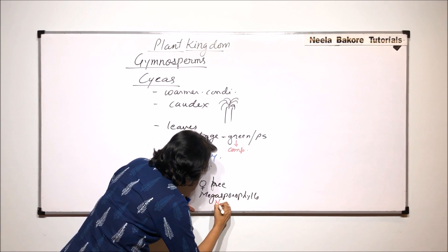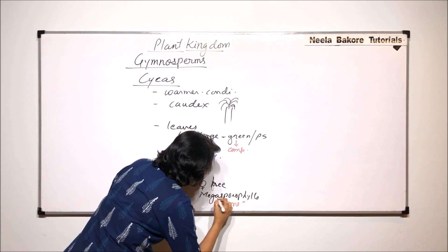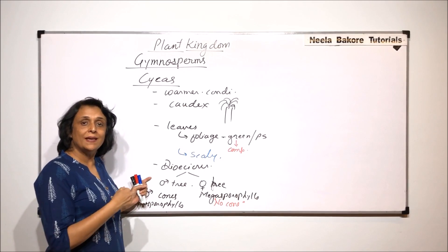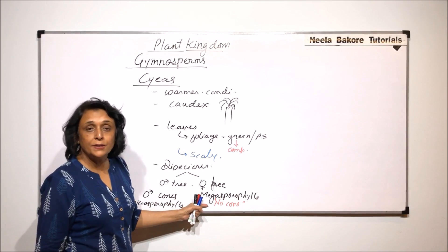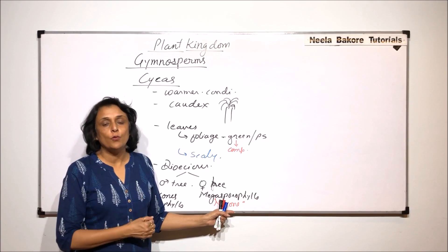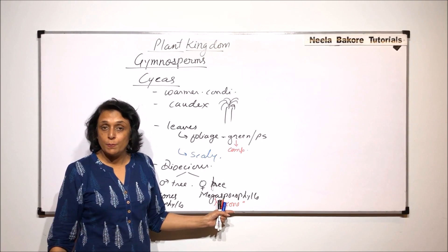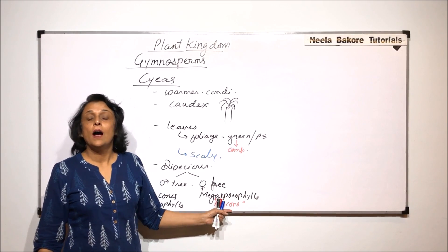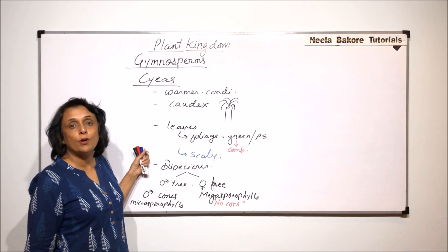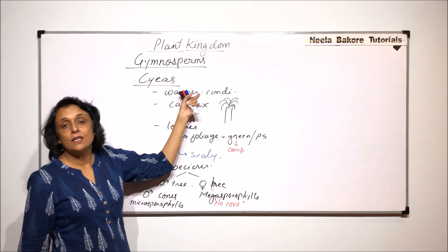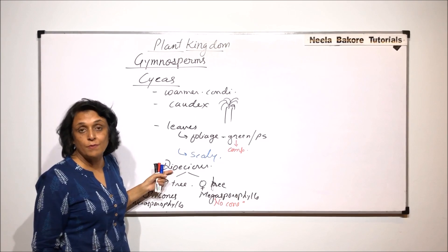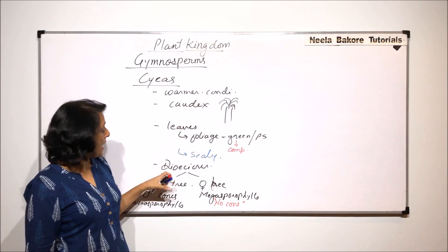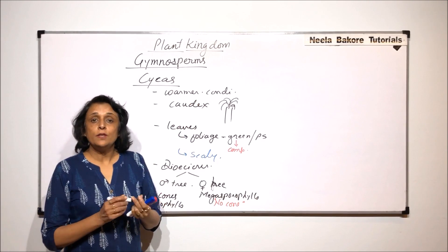On the female tree, the megasporophylls have the female gamete producing structure, that is ovule, but these are not arranged in the form of a cone. So this is another very important difference: Cycas grows in warmer regions and is dioecious. When we compare it with Pinus, then Pinus grows in colder regions and Pinus was monoecious.